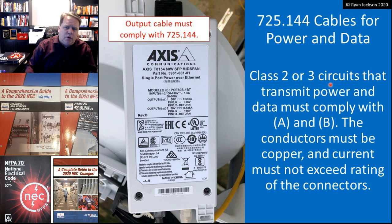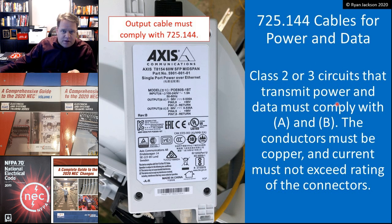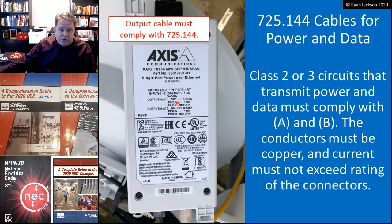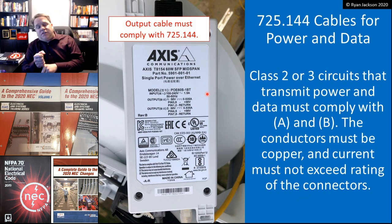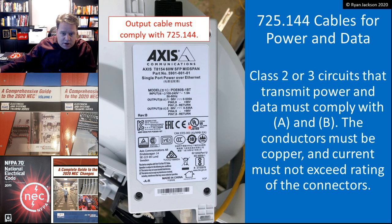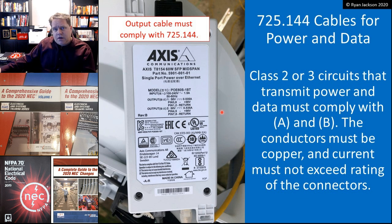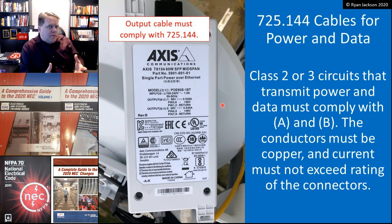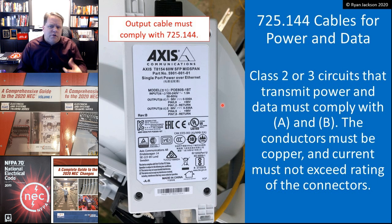Going back to 725.144: class 2 or class 3 circuits that transmit both power and data must comply with A and B. Here we have a single-port power over Ethernet power source with an input of 120 volts and an output of 56 volts at half an amp — low voltage, low current. This is a listed ITE power supply and is considered a class 2 power source. The conductors have to be copper, and the current must not exceed the rating of the connectors. We're talking about twisted pair cable, so aluminum conductors would be doubtful anyway.